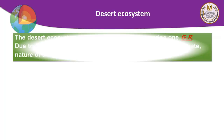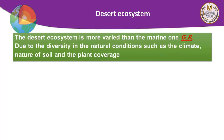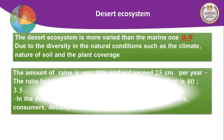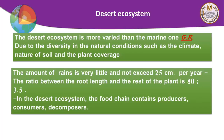Now we move to the desert ecosystem. The marine ecosystem is more stable than the land ecosystem. The land ecosystem — of which the desert is an example — is more varied than the marine ecosystem due to diversity in natural conditions such as climate, the nature of soil, and plant coverage. In the desert, the amount of rainfall is very little, not exceeding 25 cm per year.